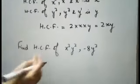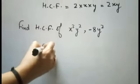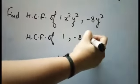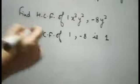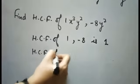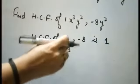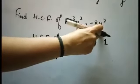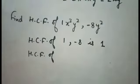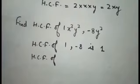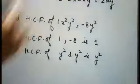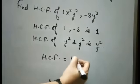One more example: find the HCF of two given monomials. The coefficients are 1 and -8, so HCF of the numbers is 1. Next, x³ appears in only one term and x does not appear in the other term, so x cannot be included in the HCF. For y: we have y² and y² — both have the same exponent, so HCF is y². Therefore the HCF of these two terms is 1 times y², which is y².